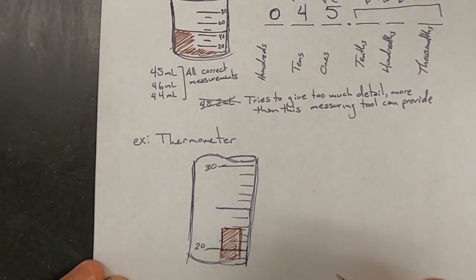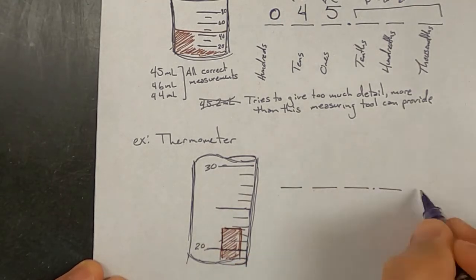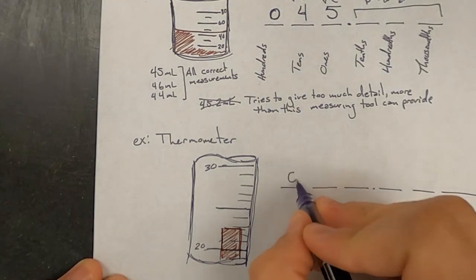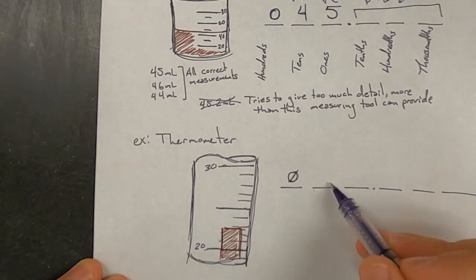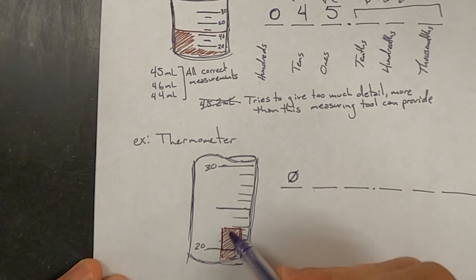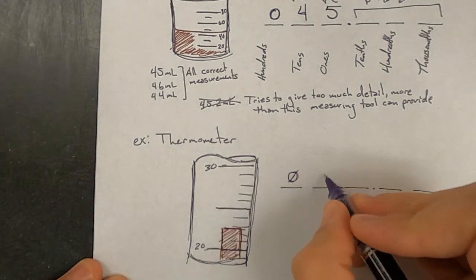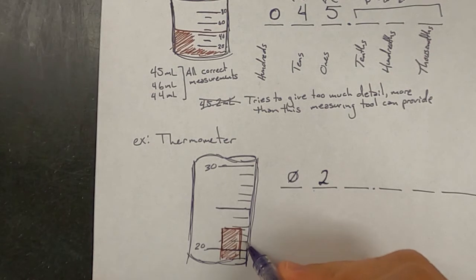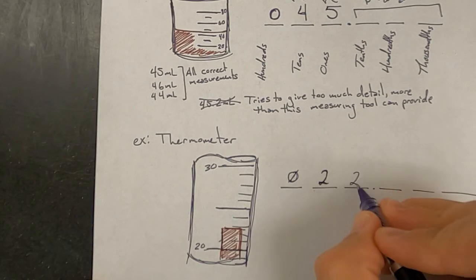Again, I'm going to draw out blanks to represent the place values. And in this one for the hundreds place, we definitely know that is less than 100 degrees in the room right now. We definitely know that for the tens place because the alcohol is between the 20 and 30 that it definitely is in the 20s. If we look and count, each one of these small marks should be representing one degree Celsius. And so this would be 21, 22, 23. We can see that the level of the alcohol is between the 22 and the 23 marks. So that has to be a known digit. It has to be a 2.